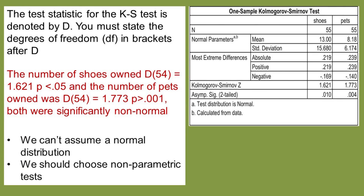I told you about the jargon. The test statistic for the Kolmogorov-Smirnov test is denoted by a capital D, and you must also report the degrees of freedom in brackets after the D. Degrees of freedom is always your sample size minus one.